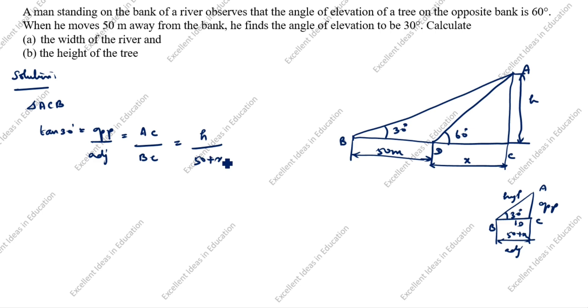What is tan 30 value? 1 by root 3 is equal to h by 50 plus x. Cross this, 50 plus x divided by root 3 is equal to h. We will take this as the first equation.